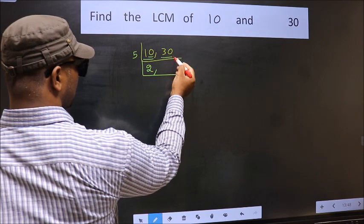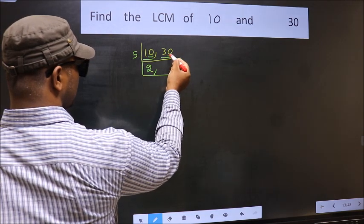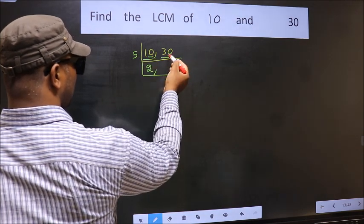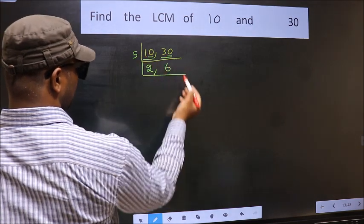Now the other number 30. Last digit 0. So this is divisible by 5. When do we get 30 in 5 table? 5 times 6 is 30.